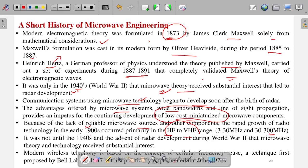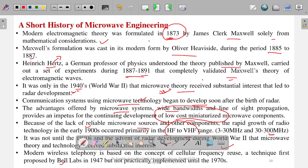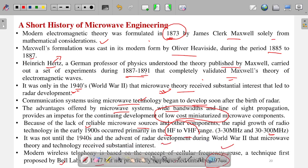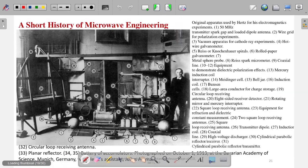It was not until the 1940s, with the advent of radar, that microwave technology received substantial interest. The modern wireless telephony based on the concept of cellular frequency reuse was first proposed by Bell Laboratories in 1947, but was not practically implemented until 1970. So, 1970 is the year when microwave engineering was properly developed and became widely adopted.